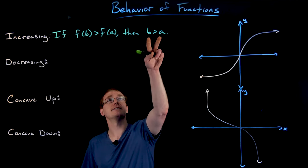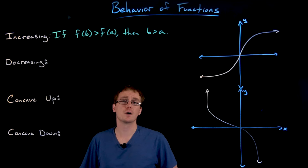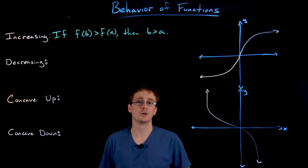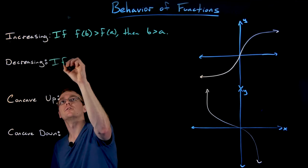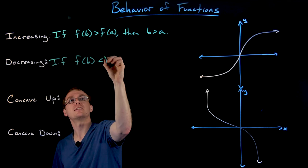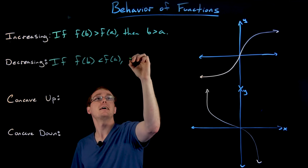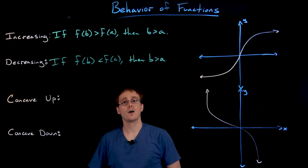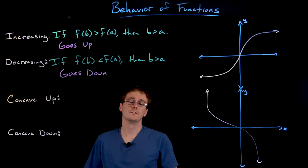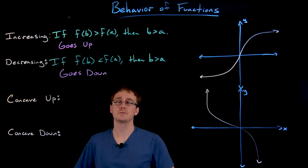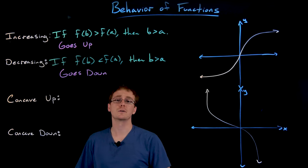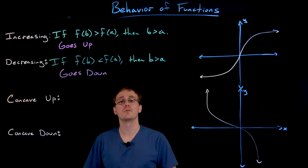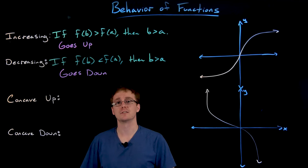We are increasing if as the inputs get bigger the outputs get bigger as well, while for decreasing the opposite occurs — the outputs should be getting smaller as the inputs get bigger. So if f of b is less than f of a, as long as b is greater than a, our function will be decreasing on that interval. In green we have our more formal statements, and in pink the informal explanation of these concepts.